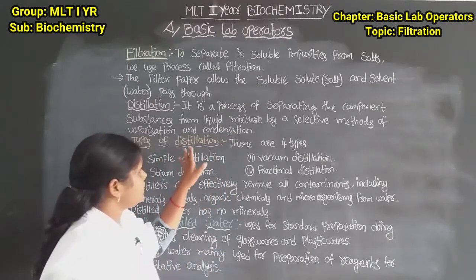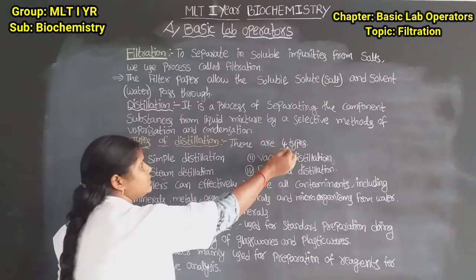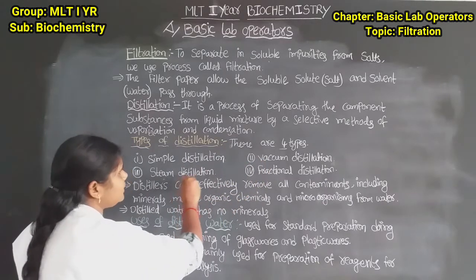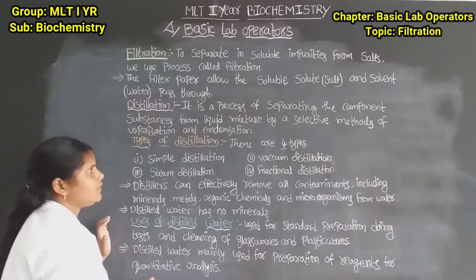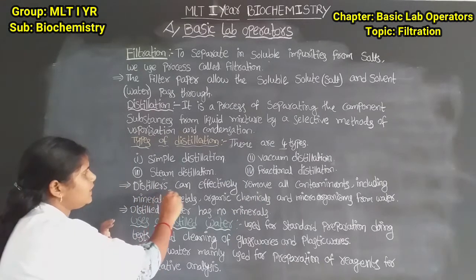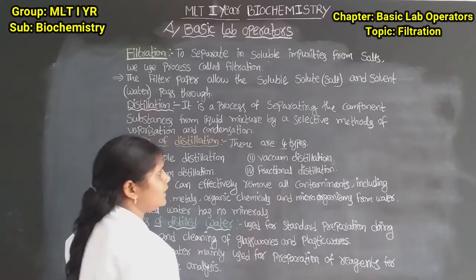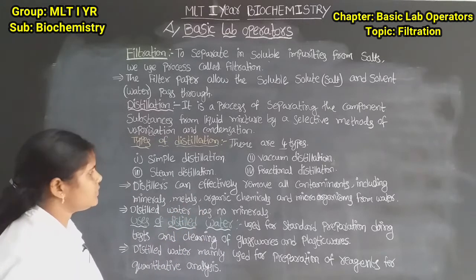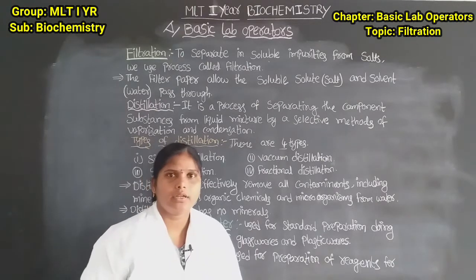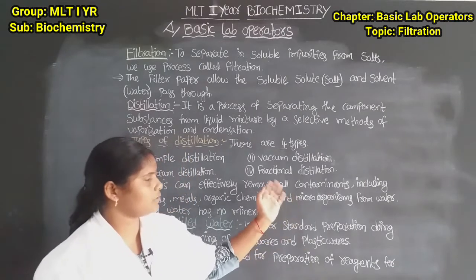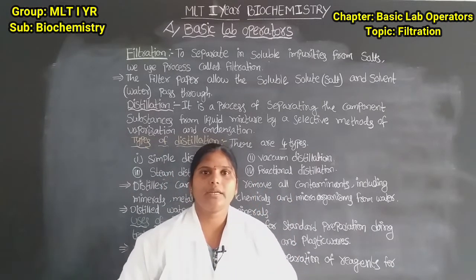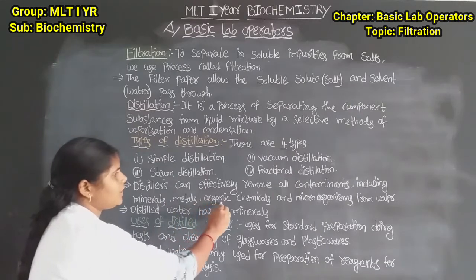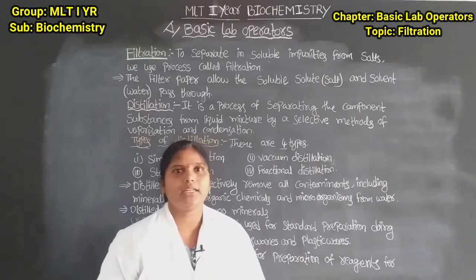Types of distillation: there are four types — simple distillation, vacuum distillation, steam distillation, and fractional distillation. Distillers can effectively remove all contaminants including minerals, metals, organic chemicals, and microorganisms from water. After distillation, distilled water has no minerals.